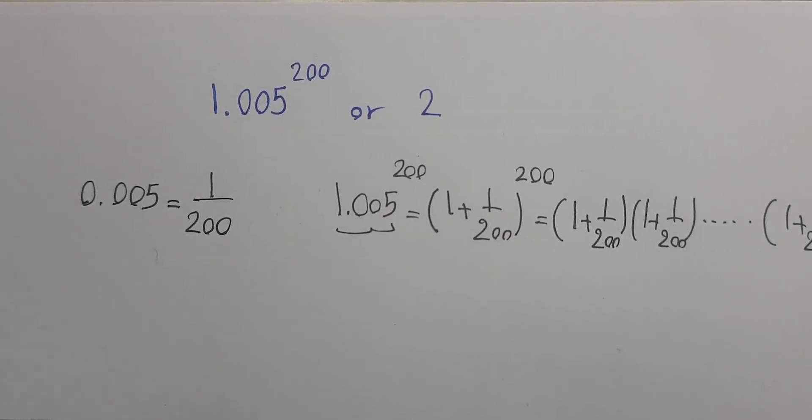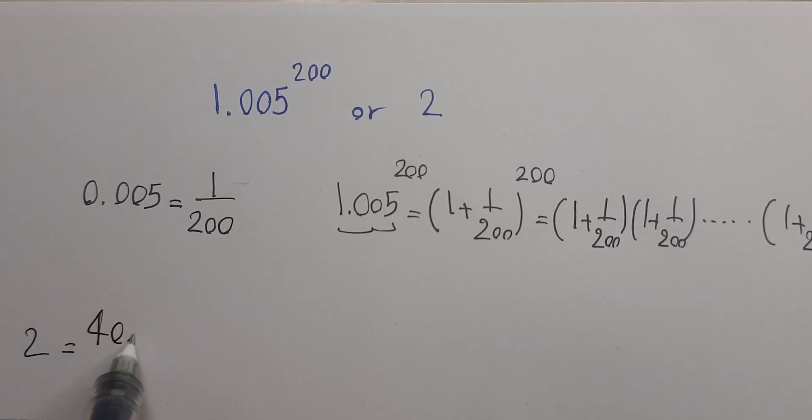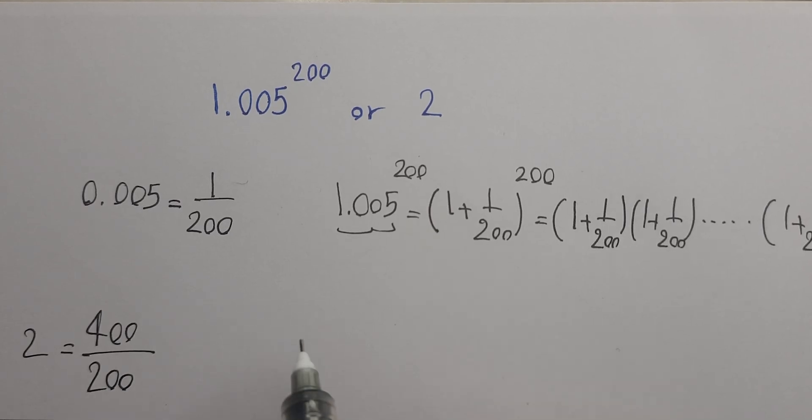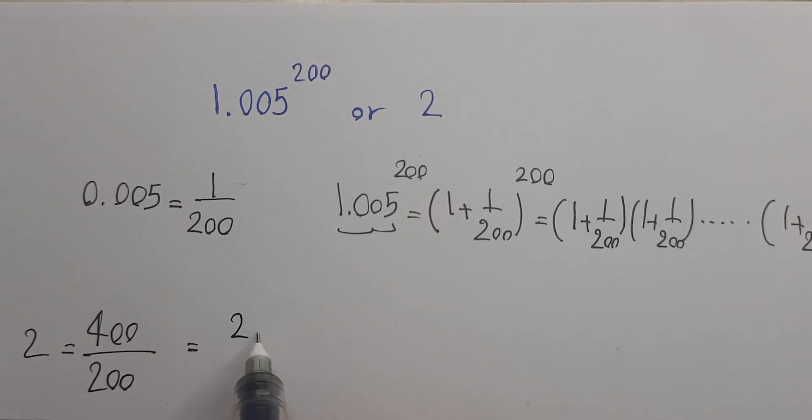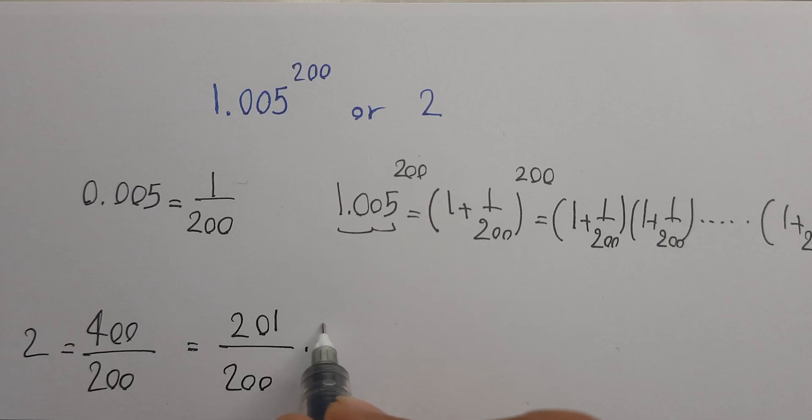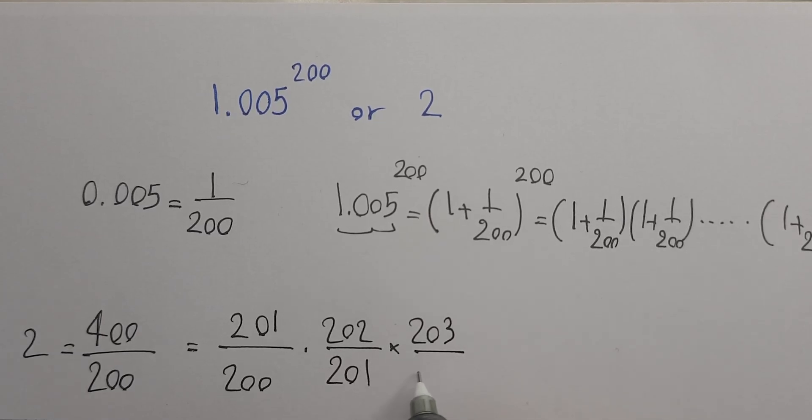Now for the right side, 2 equals 400/200, so we have (201/200) times (202/201) times (203/202)...